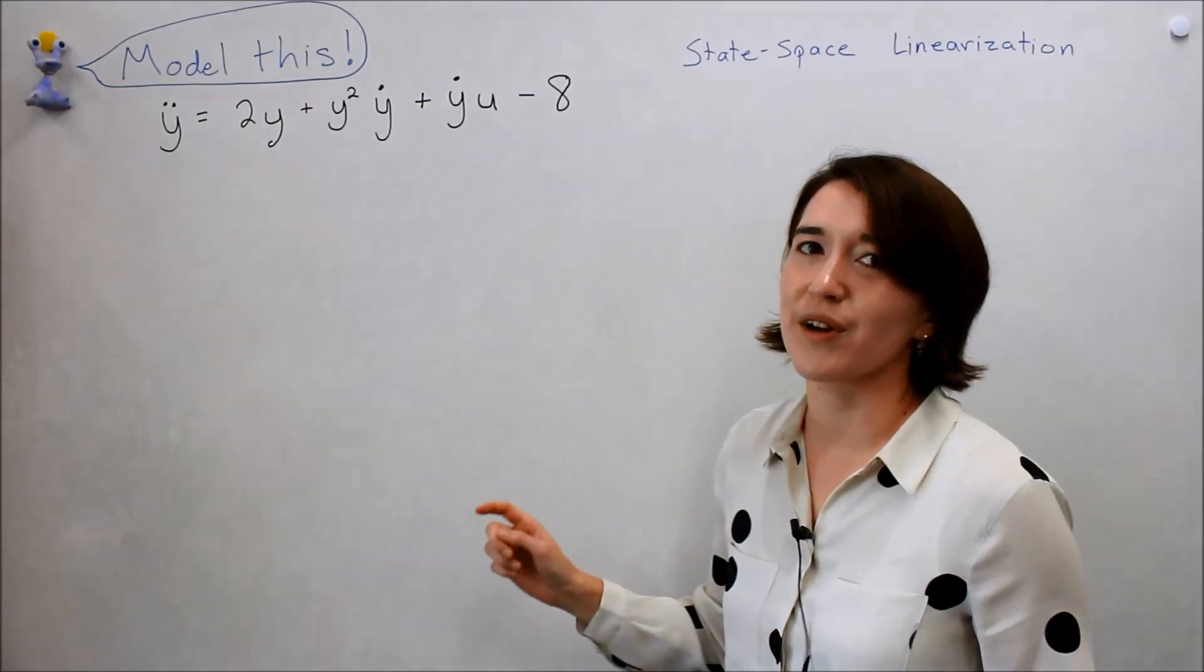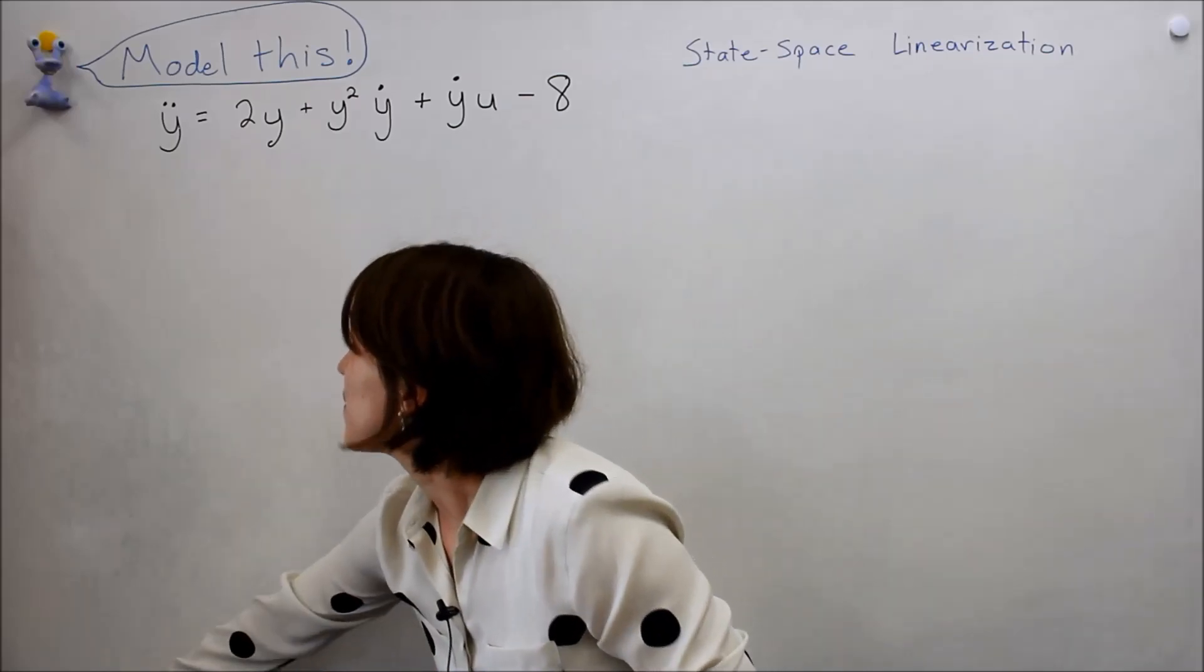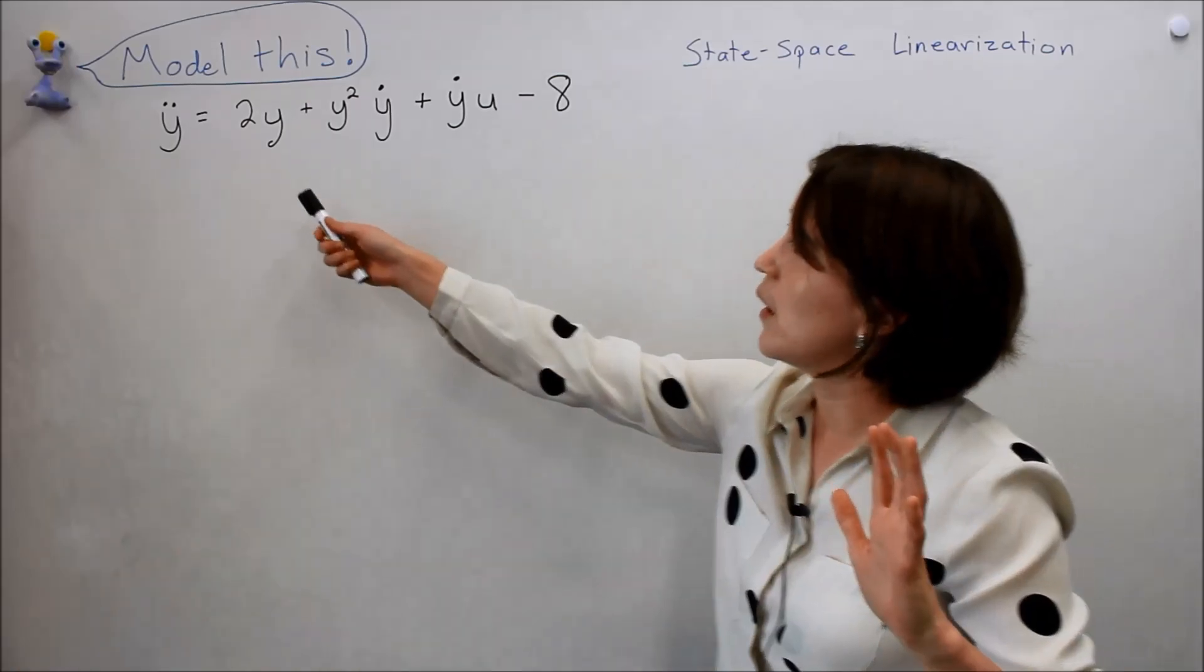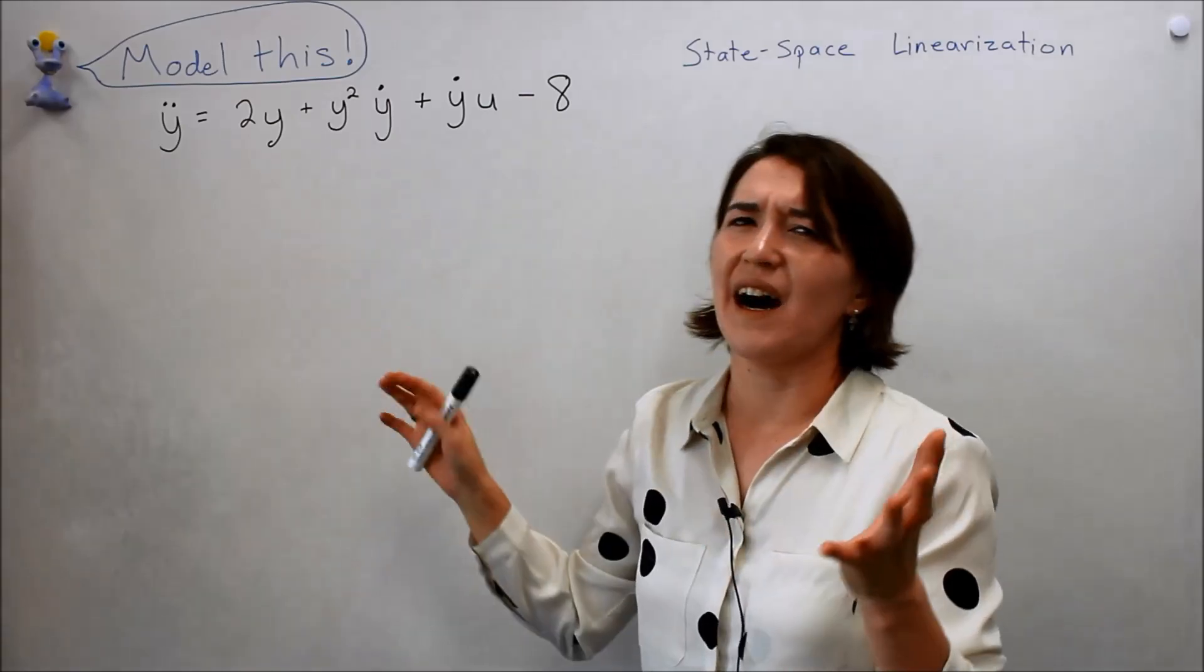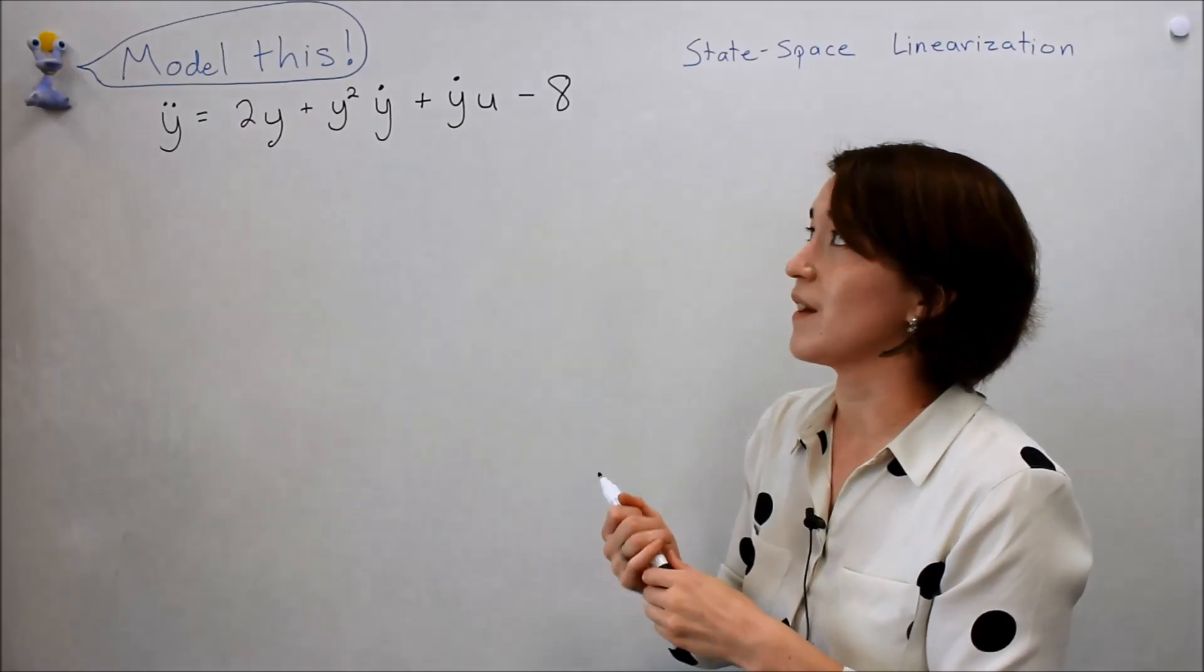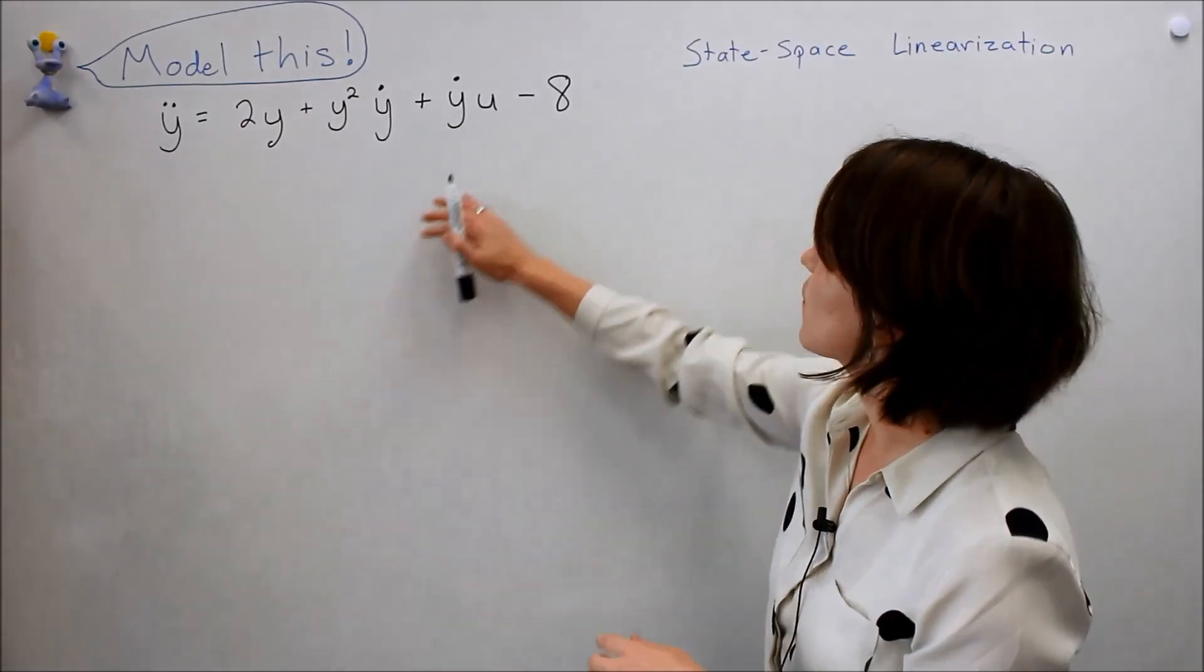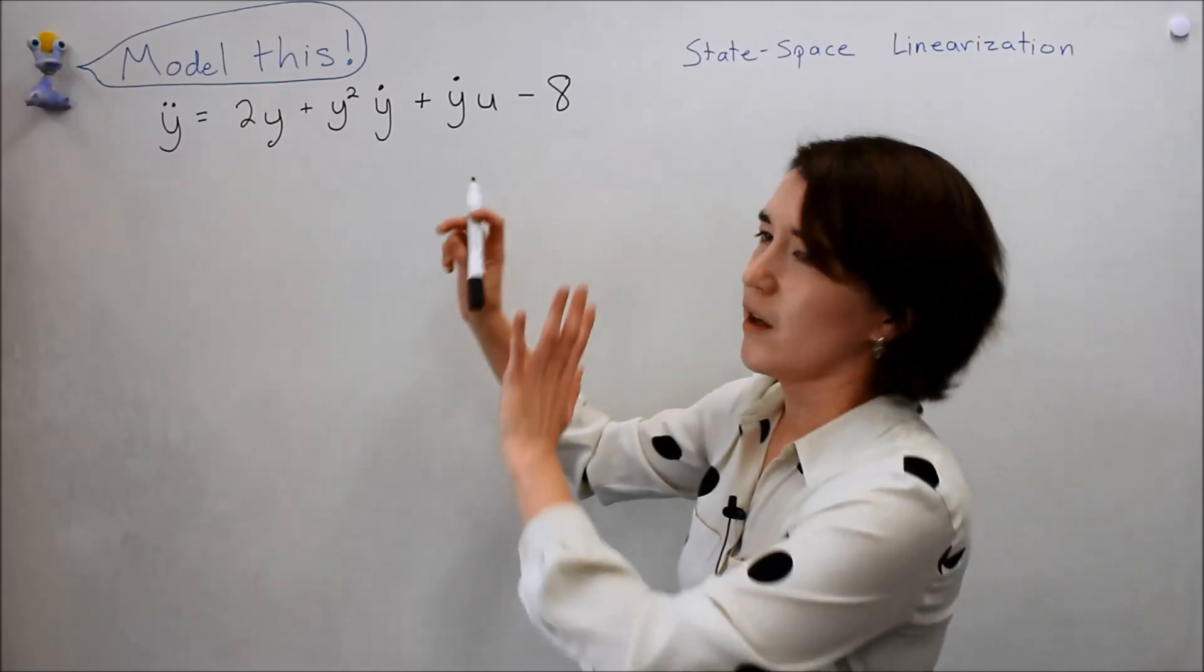We have a lot of y's and y dots and I'm getting a little confused with all the derivatives, so let's try to put this in a state space model. We'll assign specific variables, so let's first say x1 equals y.